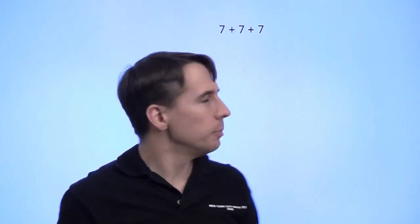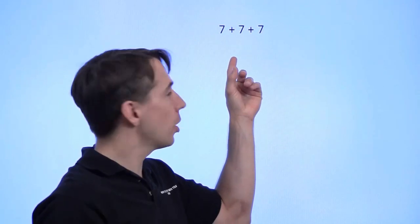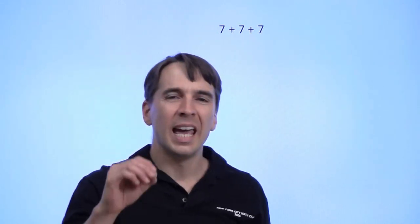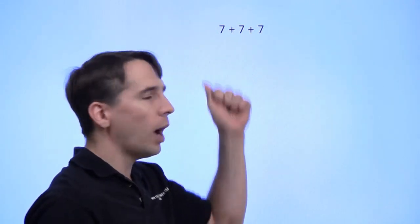That's not a good math rule. So what we're going to do here is start with 7 plus 7 plus 7 and try to use only good math rules to see why this equals 3 times 7.